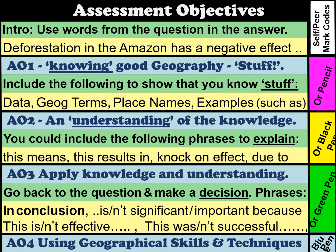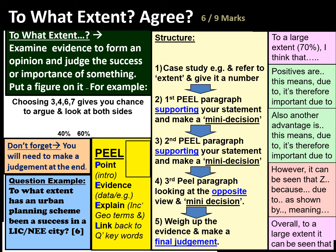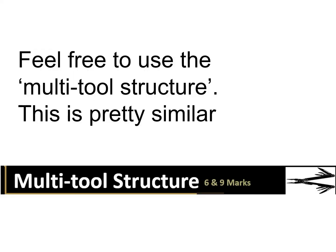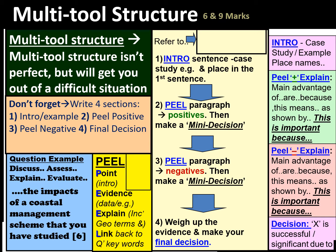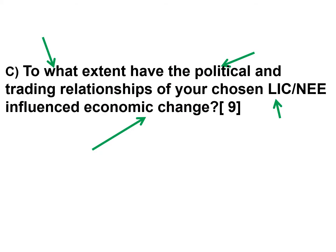For the next question we've got the assessment objectives — pause here if you need to see them again. The next question is a 'to what extent' question, so you're going to decide either 60% or 40% — which do you agree with? Don't forget: your introduction gets straight in there; your first PEEL paragraph supports your decision; your next PEEL paragraph also supports your decision; then your third PEEL paragraph looks at the opposite side — another point of view — and you weigh it up in your conclusion. Feel free to use the multi-tool structure: introduce, give a positive, give a negative, make a decision.